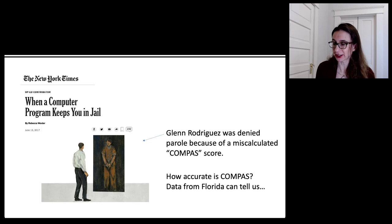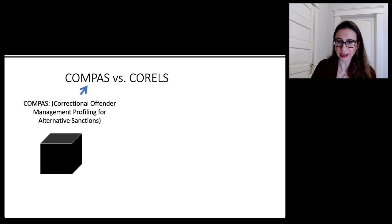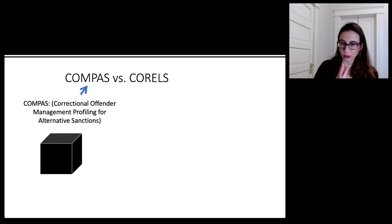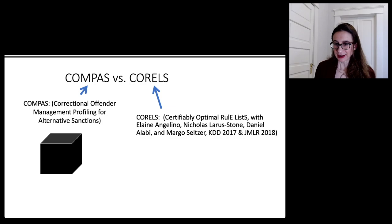Let's look at the ProPublica data from Florida — a very famous dataset. You'd think COMPAS would be more accurate than a very simple model, but in fact that's not always the case, and it's not even usually the case. We're going to do an experiment on the Florida data comparing the accuracy of COMPAS — a black box model used in the justice system — with CORELS. CORELS is our machine learning method for optimal sparse decision lists — one-sided decision trees or if-then rules that are stacked. CORELS produces tiny little models; in this case it produced a model so small it fits in the corner of a PowerPoint slide.